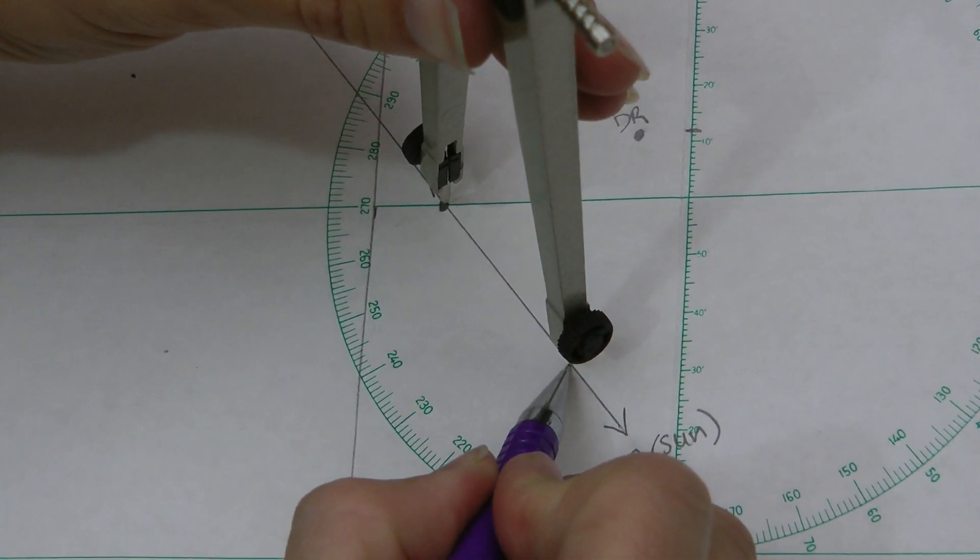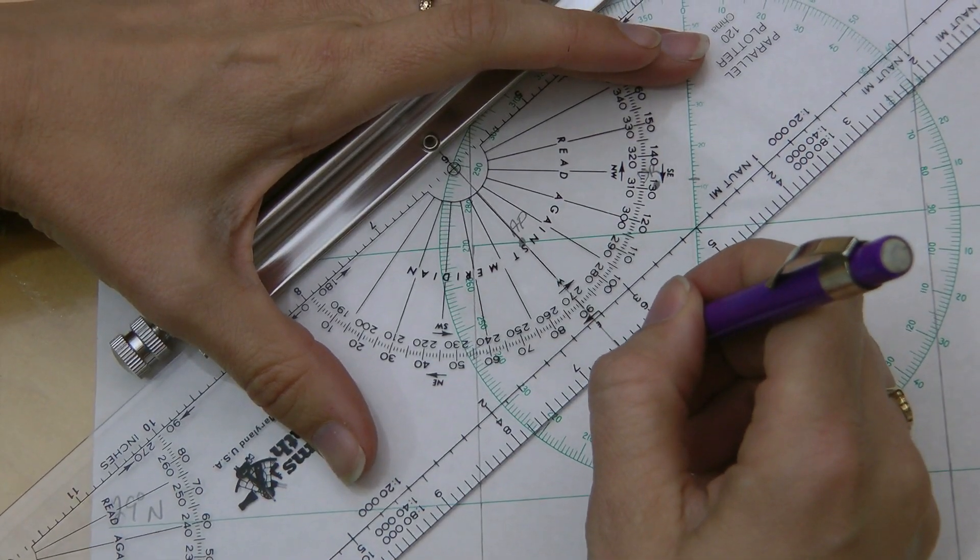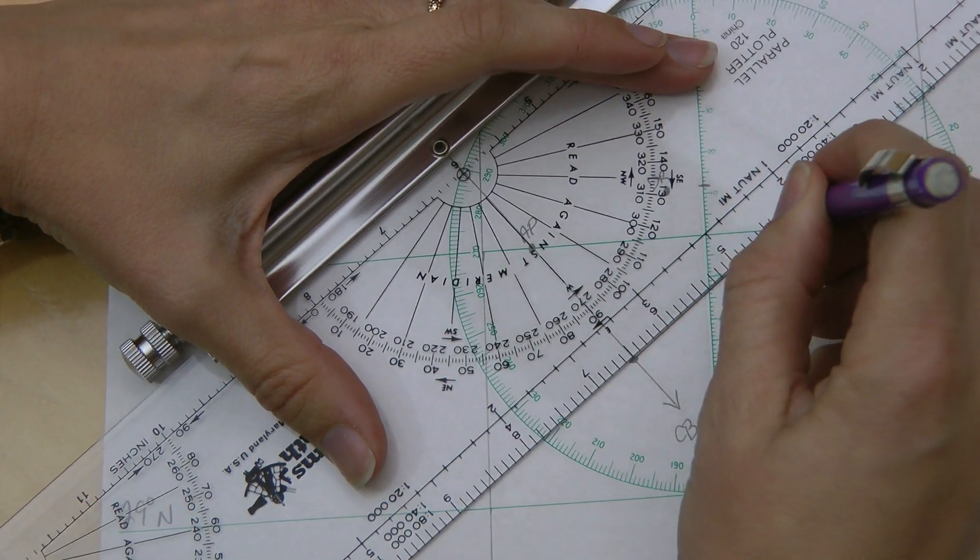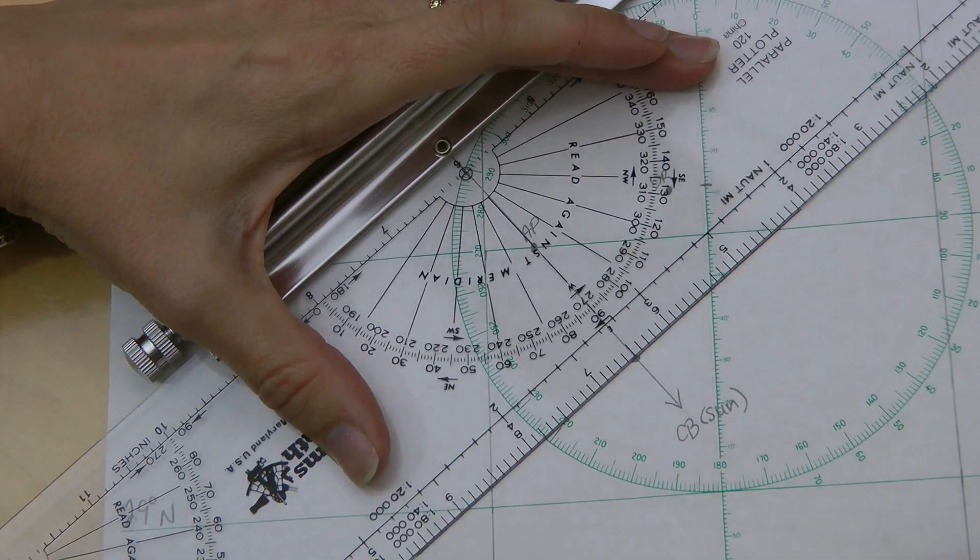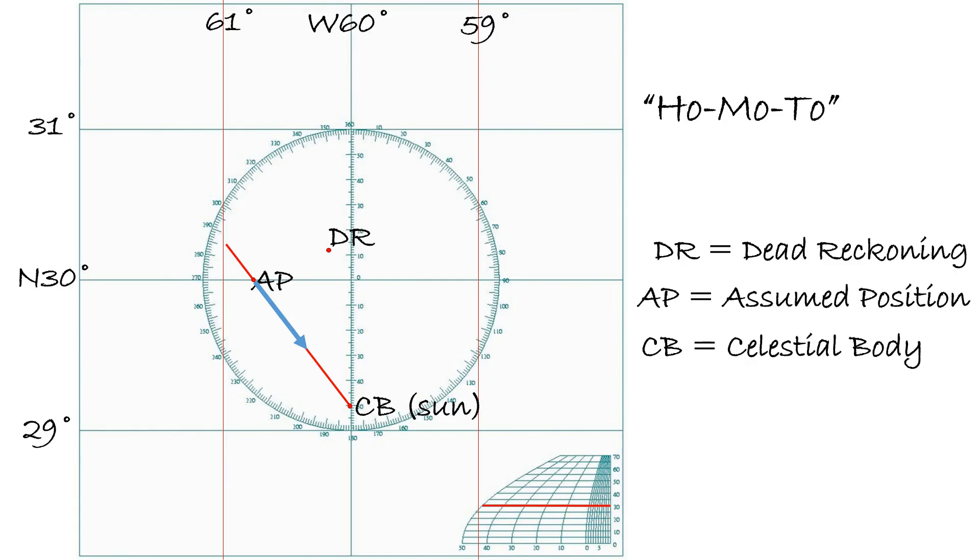The line of position lies perpendicular to the azimuth at the altitude intercept. Use a ruler to draw your line of position. In our example, we see this places the line here. We label the line of position by writing the time that we took our measurement and the name of the celestial body. Also, note LL for lower limb or UL for upper limb when needed.